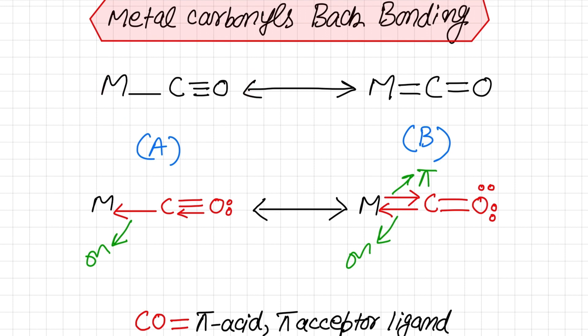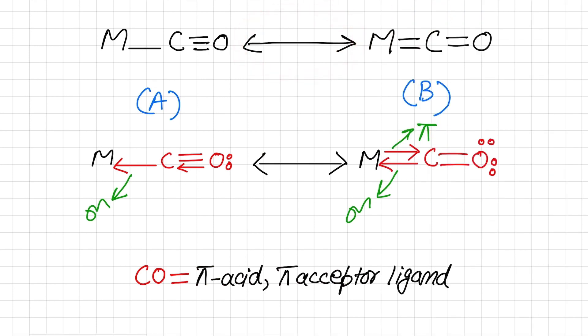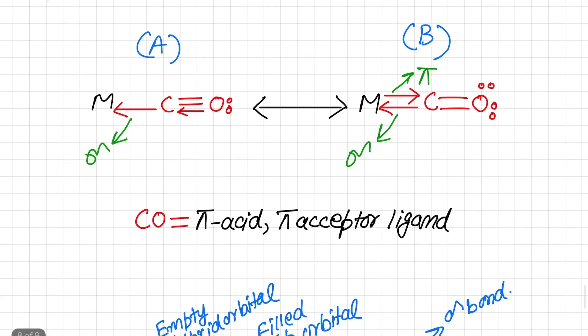The metal can back-donate this charge back towards carbon. There are two forms of metal-carbonyl bonding: A form and B form. In A form, there is one sigma coordinate covalent bond between metal and carbon. In B form, there are two bonds — one sigma and one pi. As indicated by the resonance sign, the metal-carbonyl bonding actually exists in both these forms. We can examine more deeply how this occurs in the diagram.